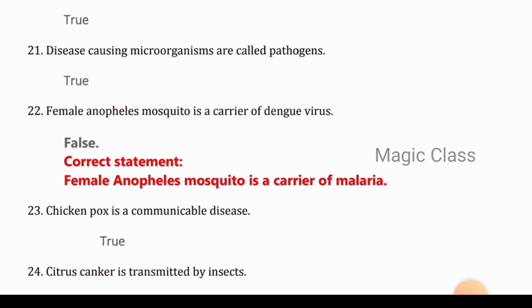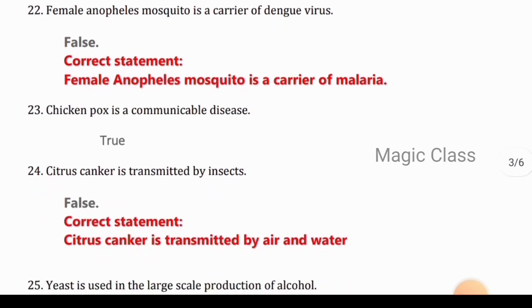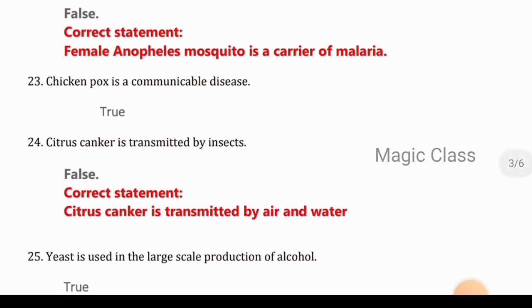Question 22: Female anopheles mosquito is a carrier of dengue virus. False, because this mosquito is a carrier of malaria. Question 23: Chickenpox is a communicable disease. True. Question 24: Citrus canker is transmitted by insects. False, because it is transmitted by air and water.